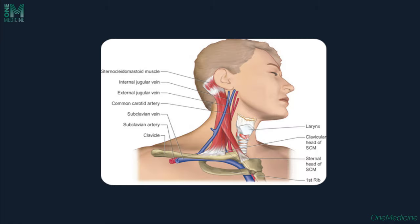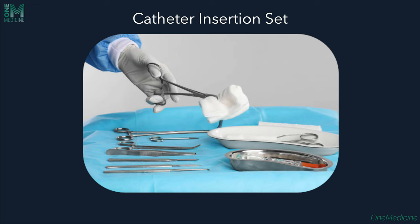Carefully observe for the carotid pulsations and have an idea about the probable surface anatomy of the jugular vein and carotid artery. After wearing sterile gloves, open the sterile dialysis catheter insertion set usually provided in the ICU. This consists of a sterile cup, forceps, kidney tray, cotton rolls, and sterile gauze and pads.